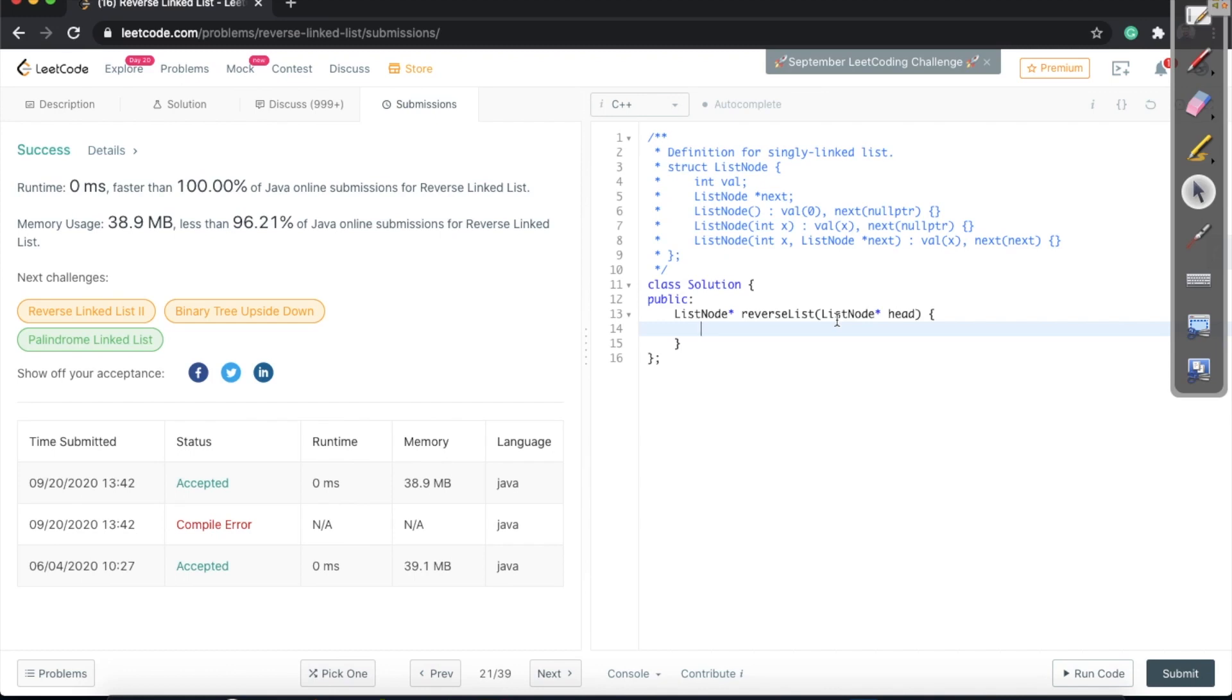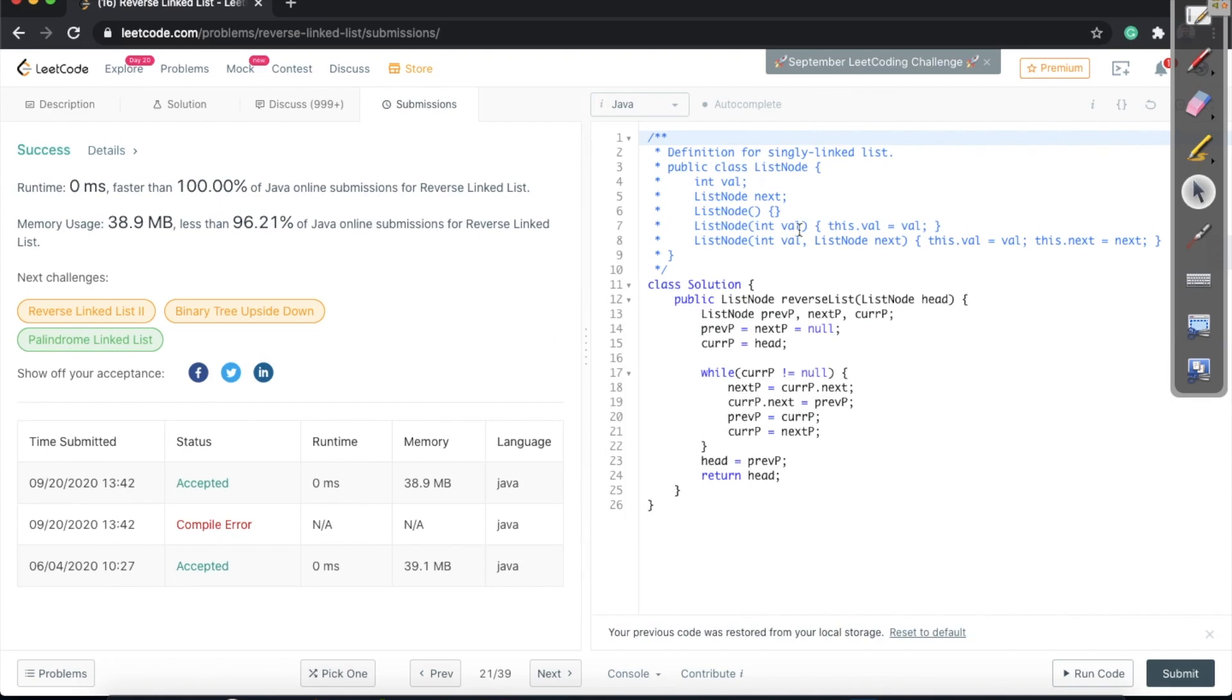So this was the iterative solution for the reversal of the linked list. In the next video, we will be looking at how we can actually reverse the linked list using recursive code. If you want the solution, you can take a screenshot, but I would say that you should actually practice it on your own. Thank you so much and we'll be meeting in the next video. Bye-bye for now.